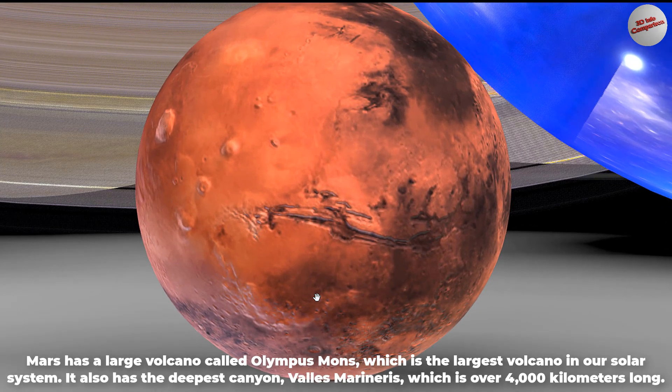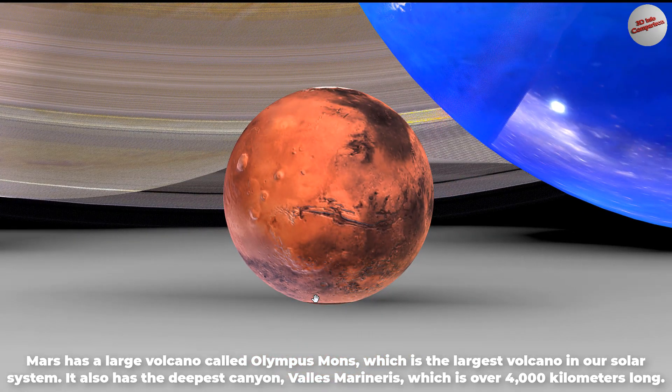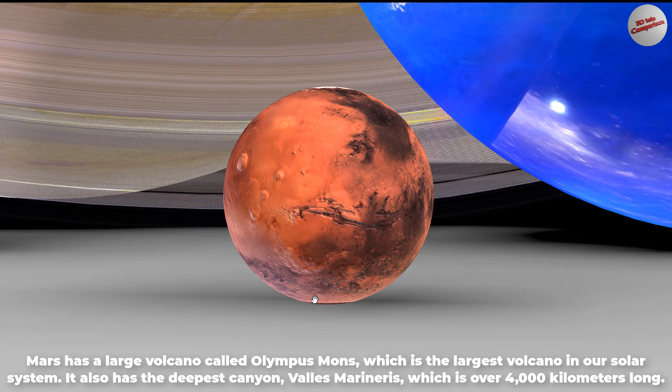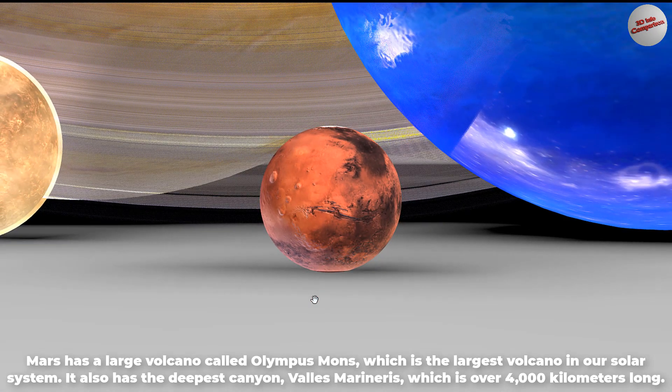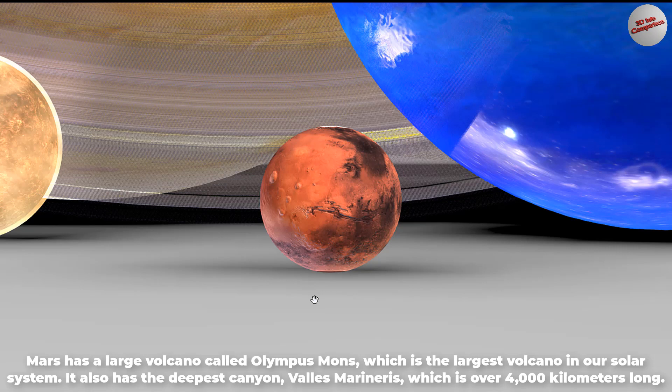Mars has a large volcano called Olympus Mons, which is the largest volcano in our solar system. It also has the deepest canyon, Valles Marineris, which is over 4,000 kilometers long.